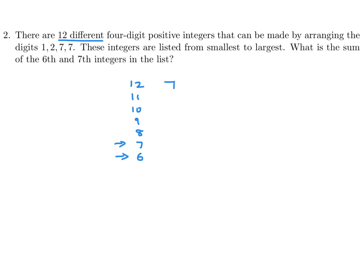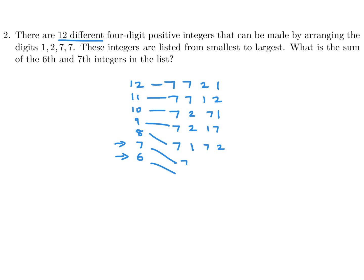Basically, putting the largest numbers first, the largest number starts with 7. The second largest would be just interchanging those two sevens. The third largest, instead of a 7 we put the next biggest number, which is 2, then 7, 1. And then the next one would have a 7 there. If we stick with 7, we can get the sixth and seventh — put a 1 there, and then a 7, 2.